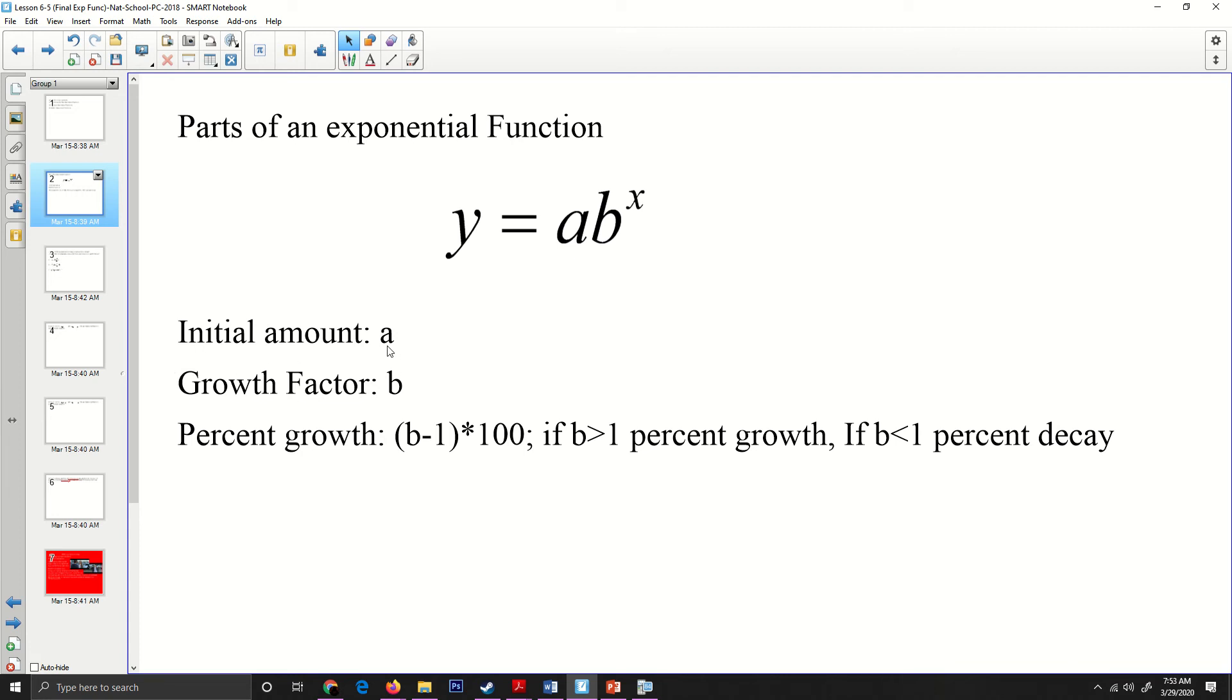Just in general, the initial amount for anything is going to be the a value right here. And the reason that is, is when you're talking about an initial amount, you're talking about the value that you're starting with, which means in general your time is going to be zero. And remember, when you take anything to the zero power, you get one. So for an initial value, this b to the x is always going to be one.